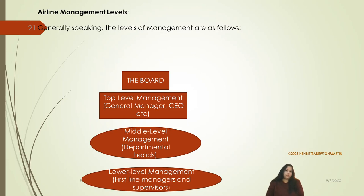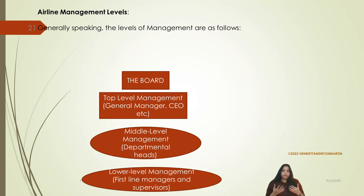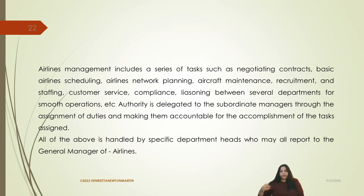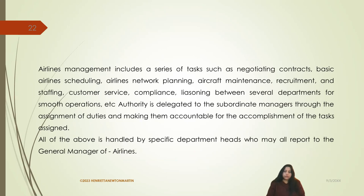Regarding airline management levels: generally, the levels of management in a company include the board at the top, then top-level management comprising the general manager, CEO, etc., then middle-level management — departmental heads — and lower-level management such as first-line managers and supervisors. Airlines management includes tasks such as negotiating contracts, basic airline scheduling, airline network planning, aircraft maintenance, recruitment and staffing, customer service, compliance, and licensing between several departments for smooth operations.